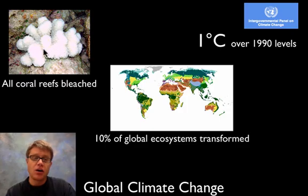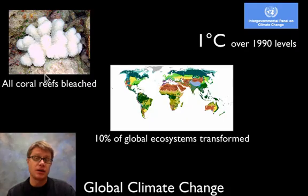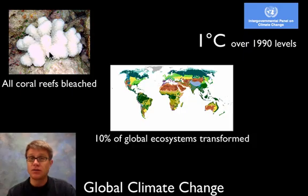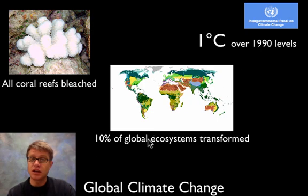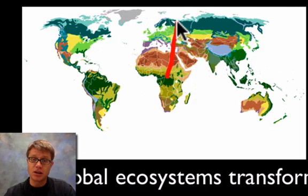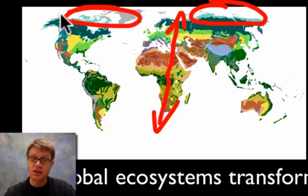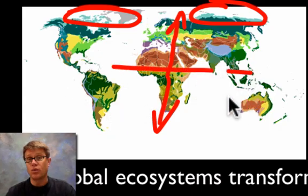If we see a one degree change, all coral reefs will become bleached. The coral extrudes its algae as a defense mechanism to temperature changes, losing the photosynthetic benefits of the algae. At one degree, they're predicting 10% of global ecosystems will be transformed. As temperature increases, areas near the Arctic will be more impacted than those near the equator.